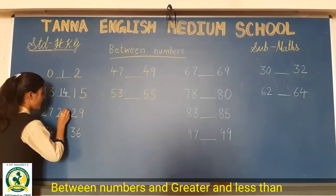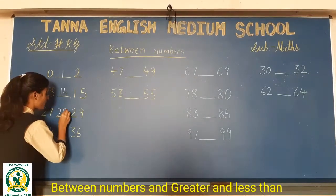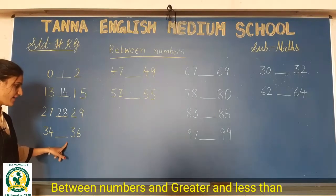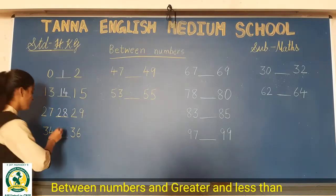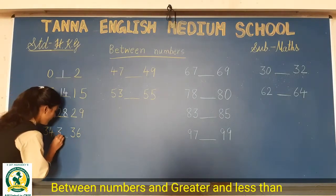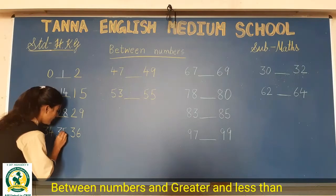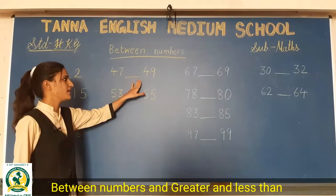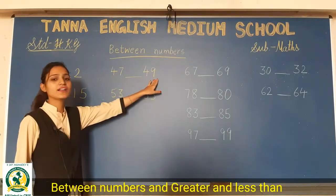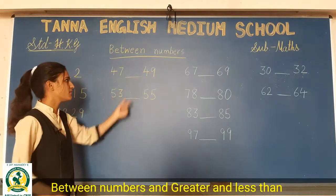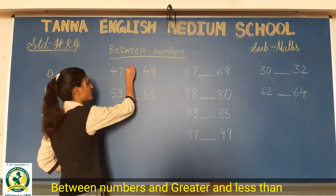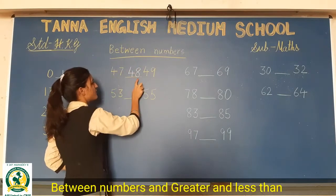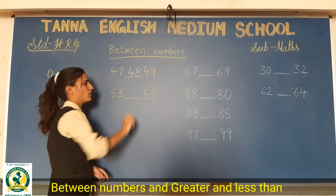So, yaha pa 28 likhna hai aapko. 34, 35, 36. So, between mein kya aayega? 35, right? Phir 47 blank 49. So, what comes in between? 48. 47, 48, 49.